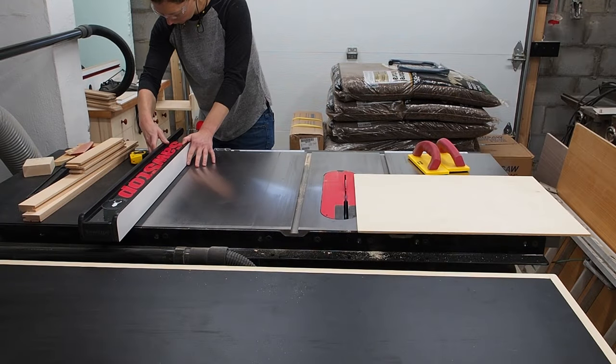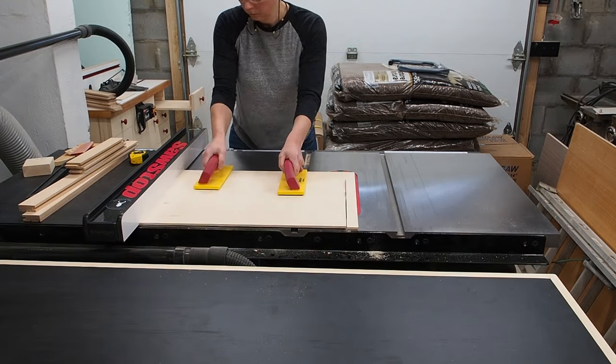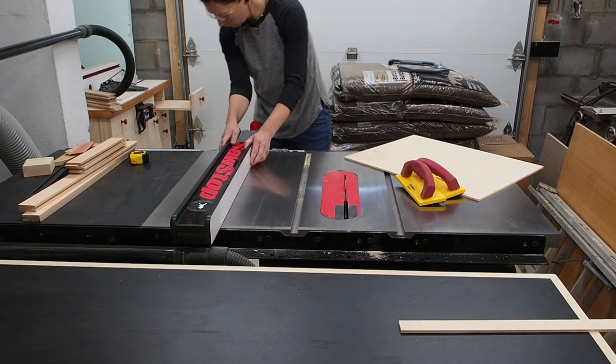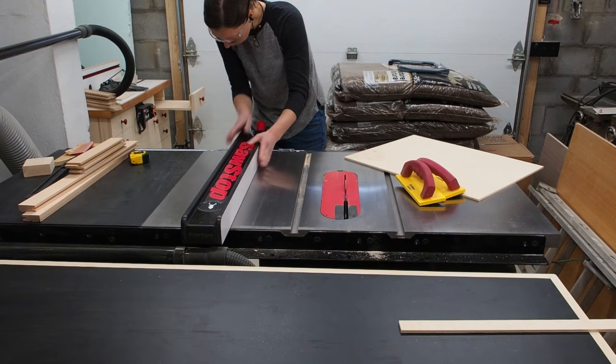So with the dimensions figured out, I can go ahead and set my fence and cut the panel. I decided to use a quarter inch plywood for this door, but you could also use MDF instead.